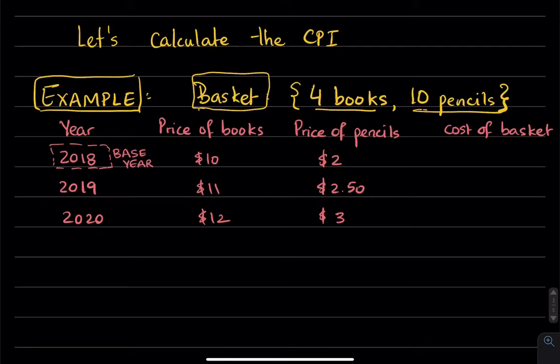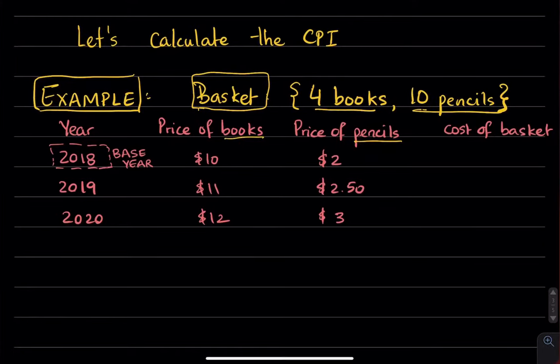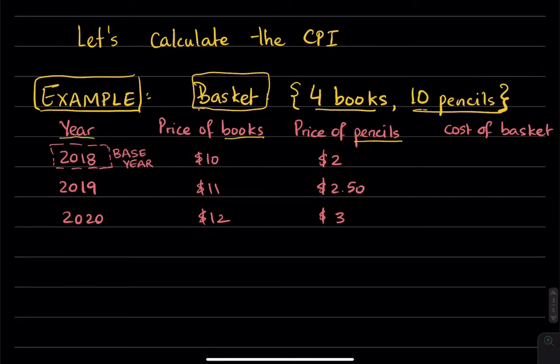So, let's take a look at the table. In our second step, we know that we collect the prices of goods and services that are in our basket. Here, we only have goods, books and pencils. The first column is telling you here the year 2018, 19, and 2020, in which those prices were collected by the Bureau of Labor Statistics.